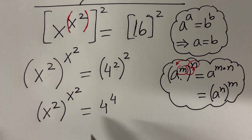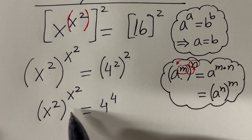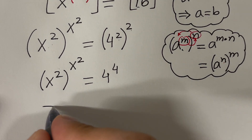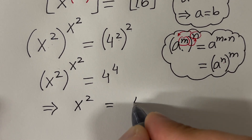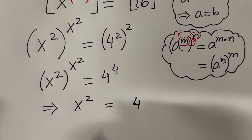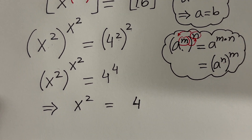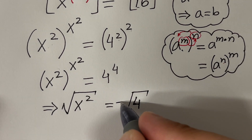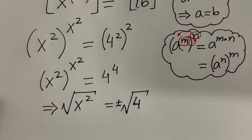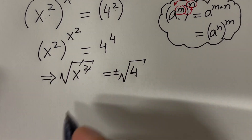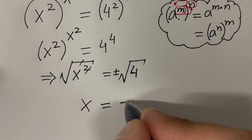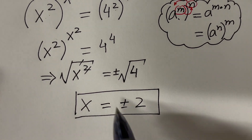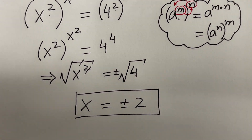On the left hand side we have x squared raised to x squared. Now you can guess how to use this property — it says this expression equals that expression. In other words, x squared equals 4 by using this property. We want to find x, so we take the square root on both sides. Whenever you take a square root you get two answers, so x equals plus or minus the square root of 4, which is 2.